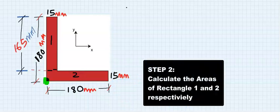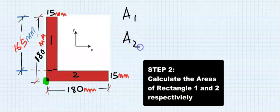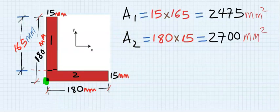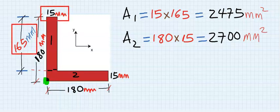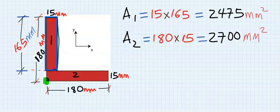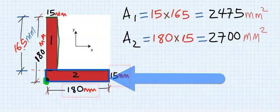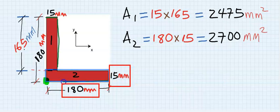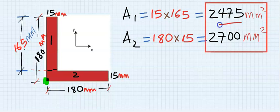Step number 2: Calculate the area of rectangle 1 and the area of rectangle 2. The area for rectangle 1 is the base multiplied by the height, which is 165. While the area for the second rectangle is the base multiplied by the height. Now, we have obtained the area of the first rectangle and the area of the second rectangle.